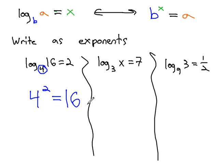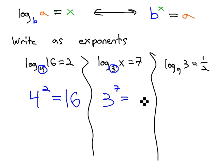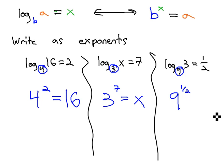In this next example, we have log base 3 of x equals 7. The base is the base of the exponent problem. The log equals the exponent, so 7 must be the exponent, with x being the solution. In this last example, we have log base 9 of 3 equals 1 half. The base is the subscript of 9, and the exponent is what the log equals — a log is always an exponent — so the exponent is 1 half and it equals 3.